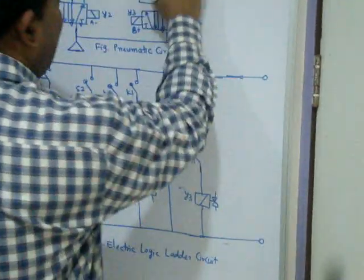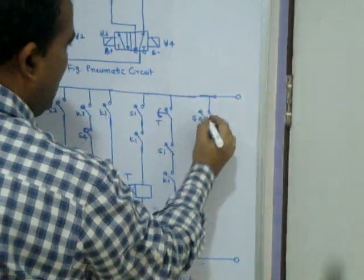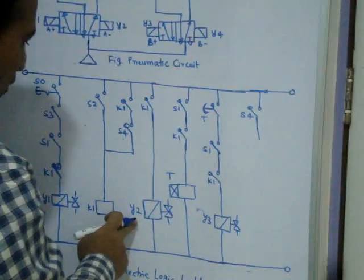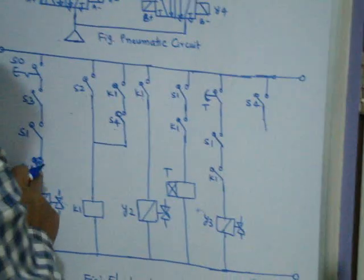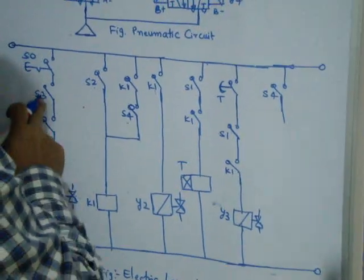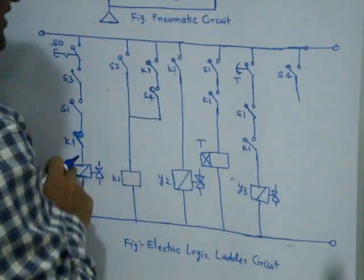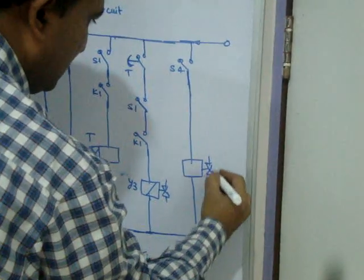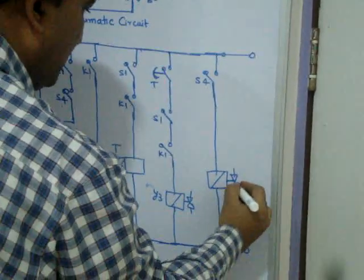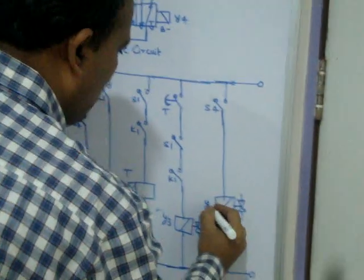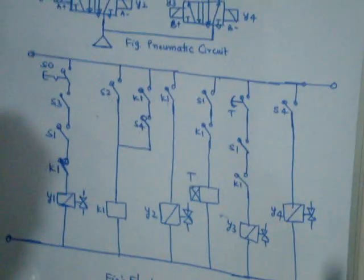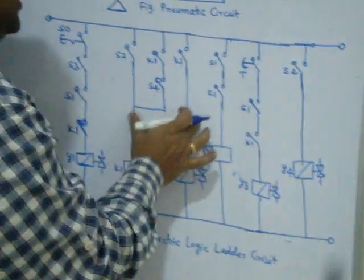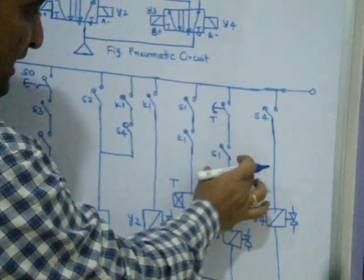When it reaches S4, two things happen immediately: K1 is turned off, and Y2 will be off. S4 will be on, K1 is off, Y2 will be off and it will close, ready for the next cycle. But S1 is on and S3 is now off, so Y1 is not working. When it reaches S4 — that is Y4, B minus. So the sequence is: A plus, A minus, two lines for A minus, timer delay, then B plus, then B minus.